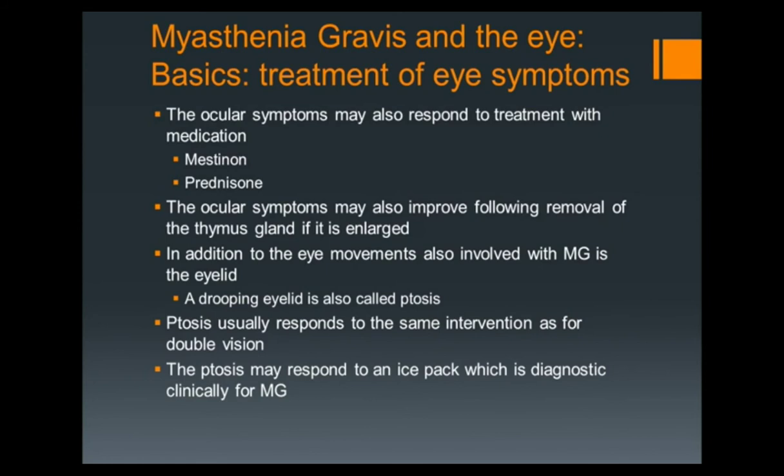What can we do about it medically? The ocular symptoms tend to respond better to prednisone than mestinone, even though mestinone is your first-line drug, because 80% of patients are still going to have systemic myasthenia and need mestinone. The ocular symptoms may improve following removal of the thymus gland if it's present, which is why we're now scanning everybody's chest and trying to get the thymus removed. Eye movements with myasthenia can also affect the eyelid. The drooping eyelid — ptosis — is very difficult to fix. We can sometimes use medications, but sometimes we have to use mechanical devices like a ptosis crutch or even surgery to lift up the lid.